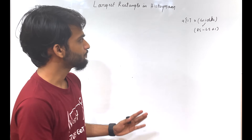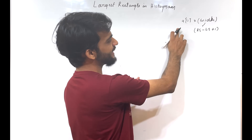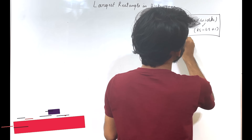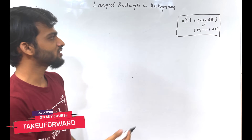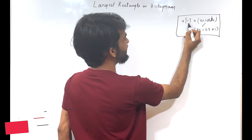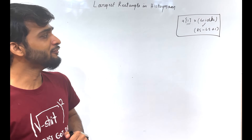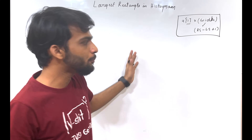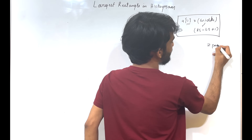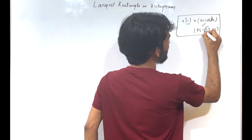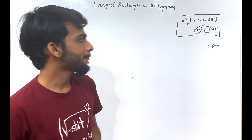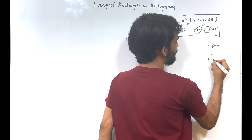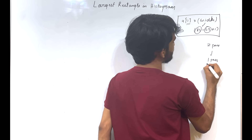In the previous approach, we used this formula to find out the rectangular area for every a[i]. This was a two-pass solution where we had to figure out the left smaller as well as the right smaller. Now, how do we convert this two-pass into a one-pass solution?